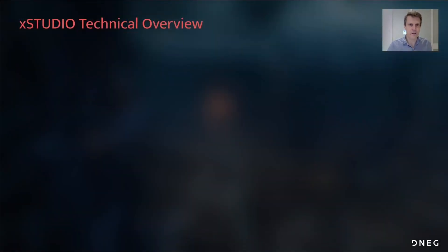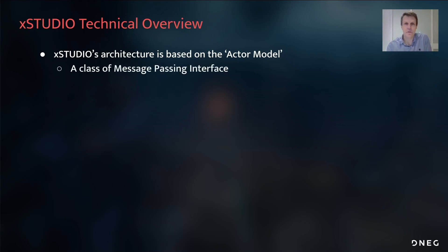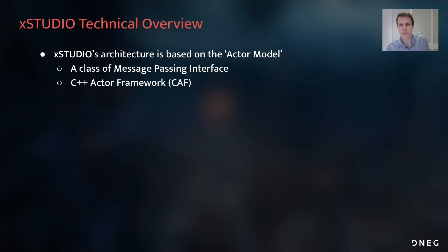In the remaining time, I'll talk briefly about XStudio's architecture. A key aspect of XStudio's design is that we've used a message-passing design pattern called the actor model as part of the architecture. This was done using an open source project called the C++ Actor Framework, or CAF for short, to build the core components. If you're interested in concurrency, asynchronous and distributed computing, I recommend checking out CAF — it's a really great piece of technology.